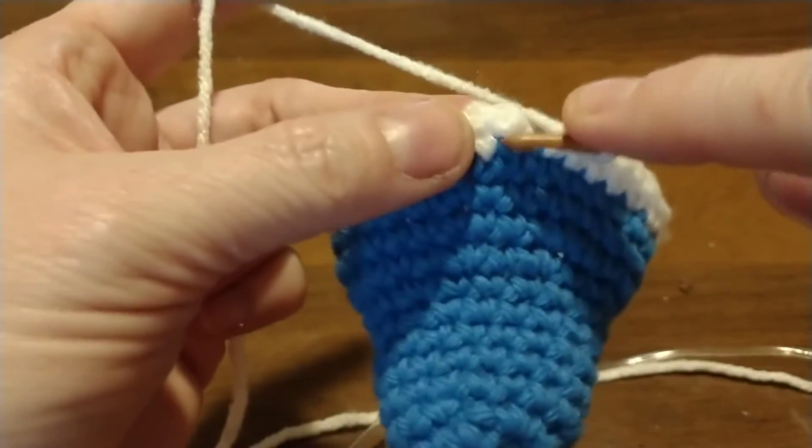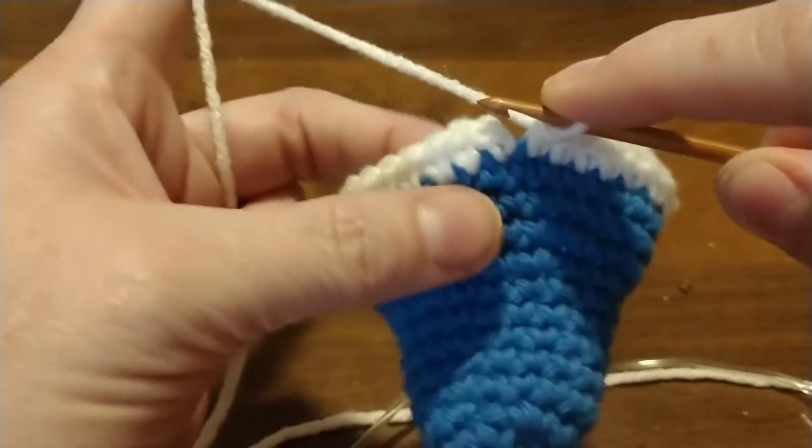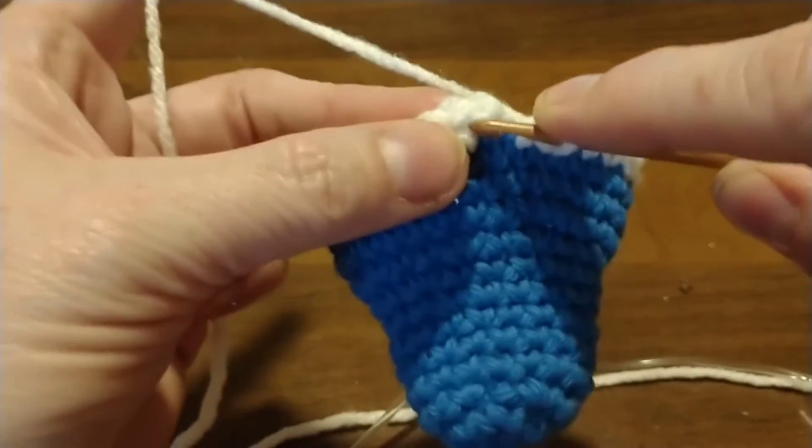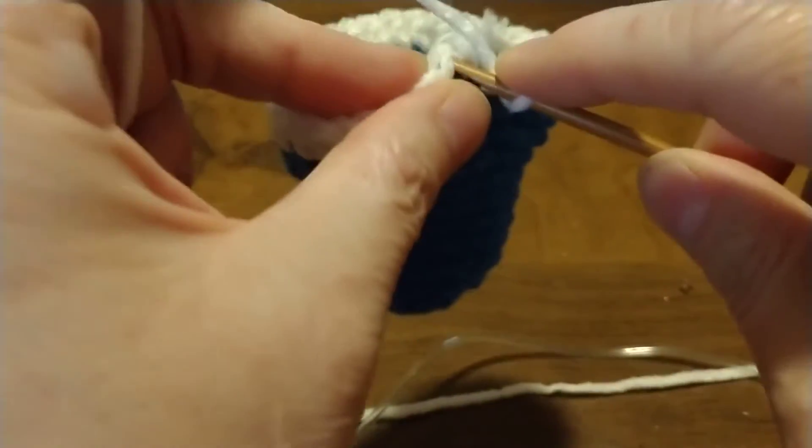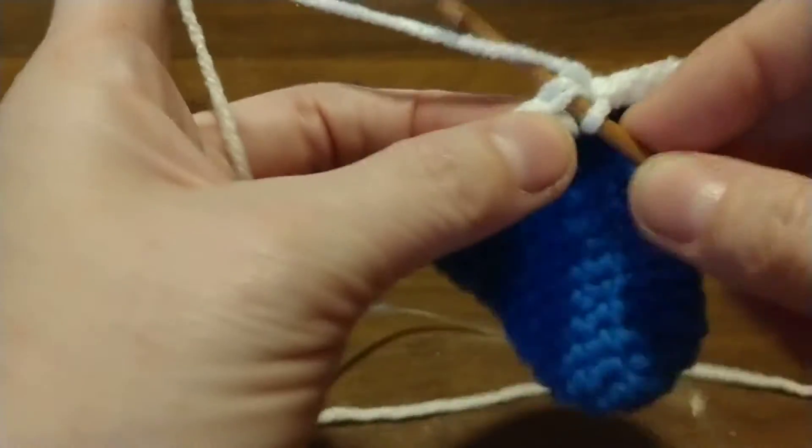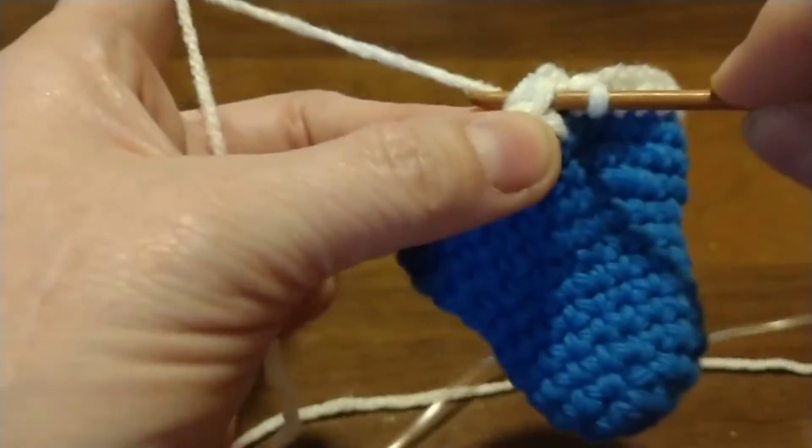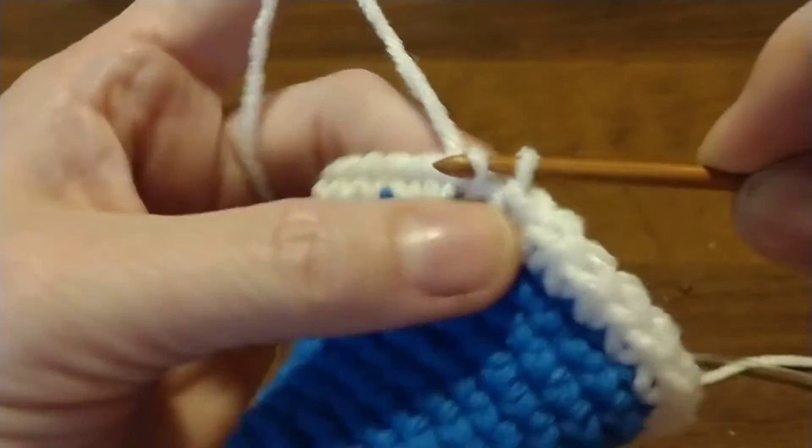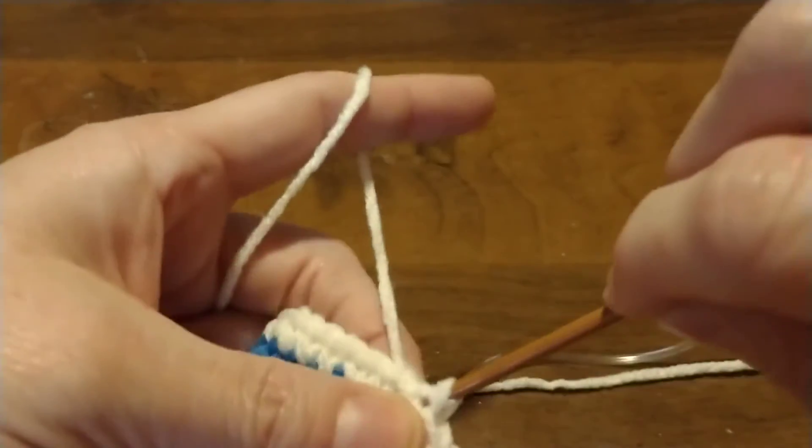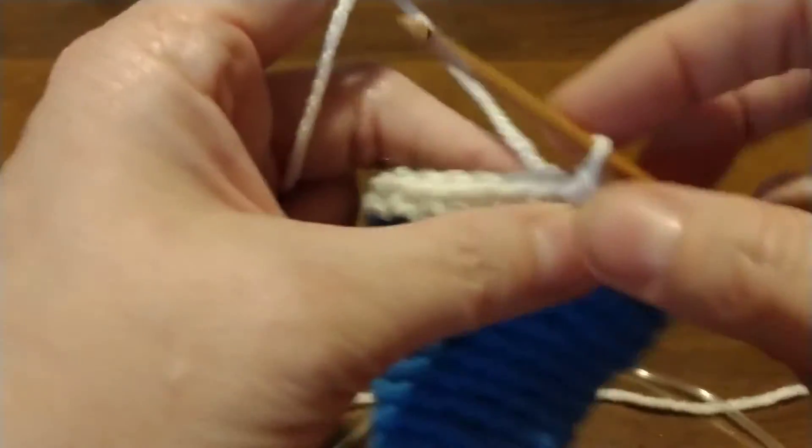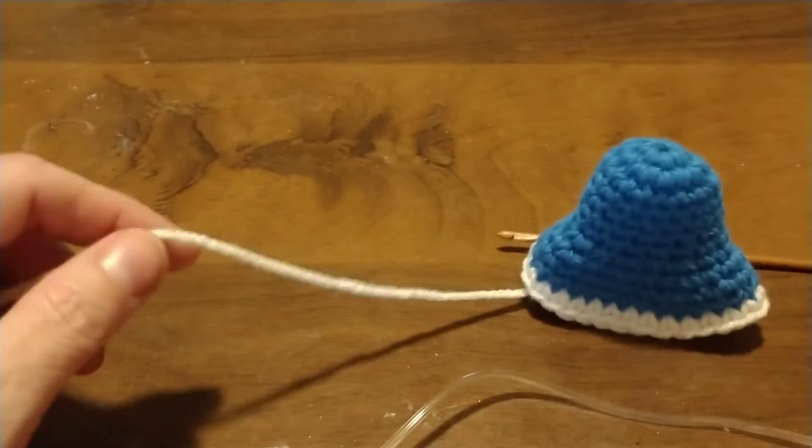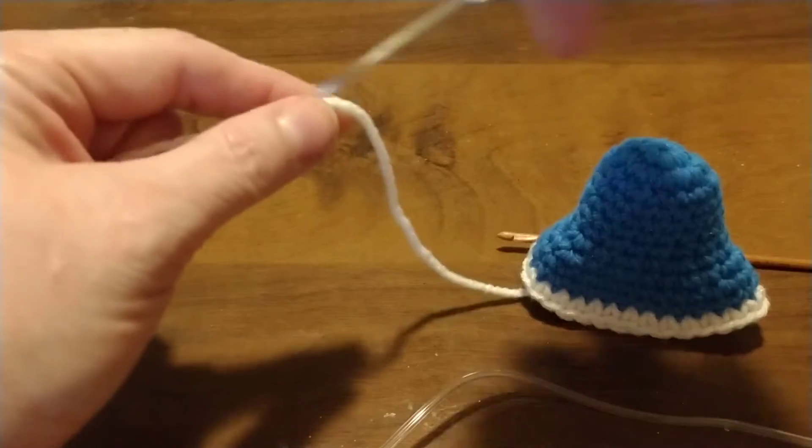Now where I did that first single crochet right here, I am going to do a slip stitch and pull through. Now I'm going to leave a bit of a tail, at least a two-inch tail, maybe a little bit more.